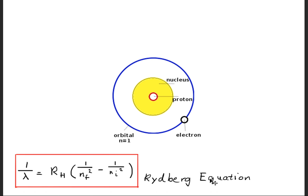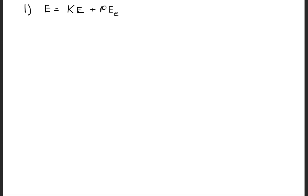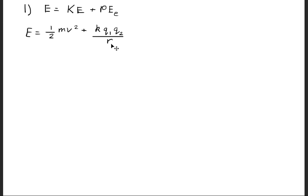Today we're going to derive the Rydberg equation. We begin by writing that the energy is equal to the kinetic energy plus the electrical potential energy. Kinetic energy is simply one-half mv squared. The electrical potential energy is the Coulomb constant times the charge of the first particle times the charge of the second particle, divided by the separation distance R.